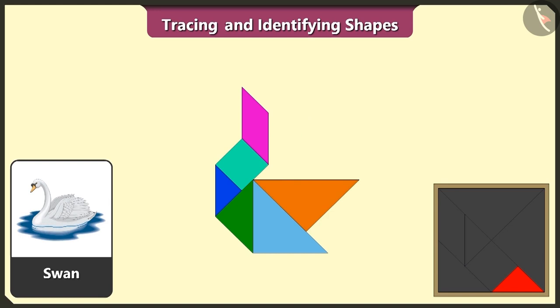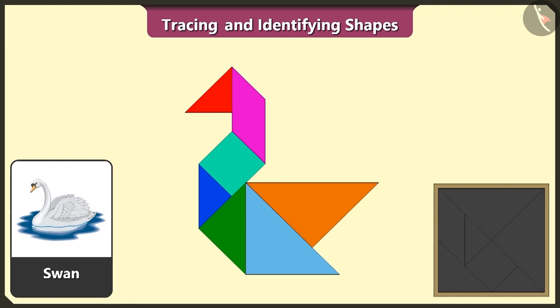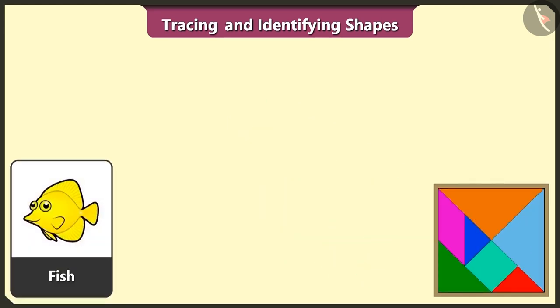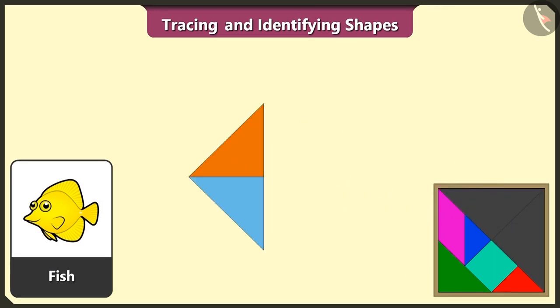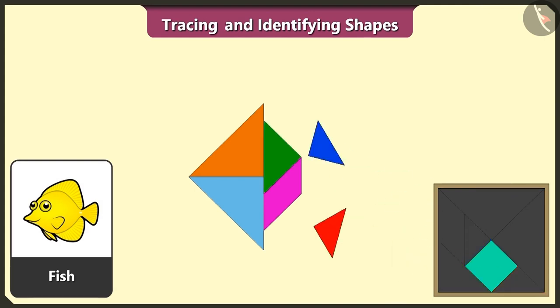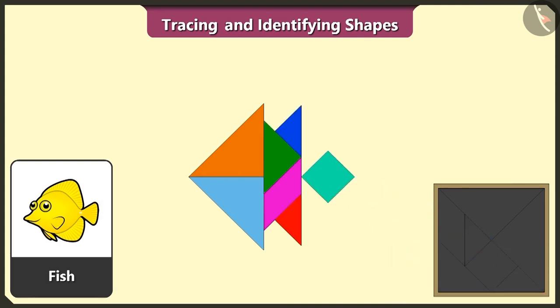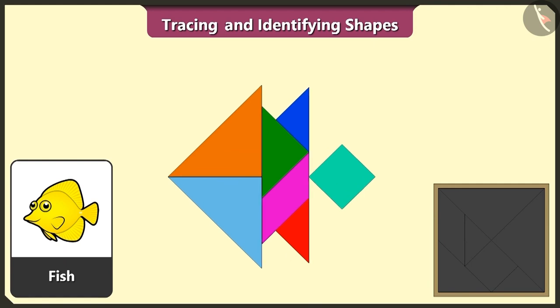One quadrilateral and one triangle — the swan is also ready. This is really interesting! This is a fish. Let's try and create a fish using two triangles, one quadrilateral, one triangle, two more triangles, and one square. And we have created a fish!